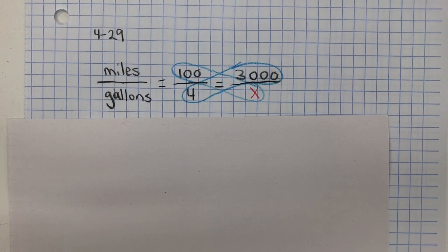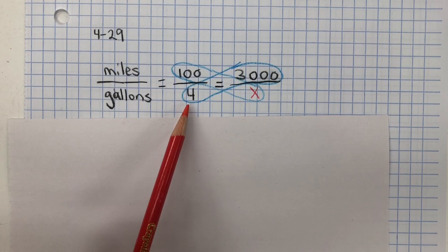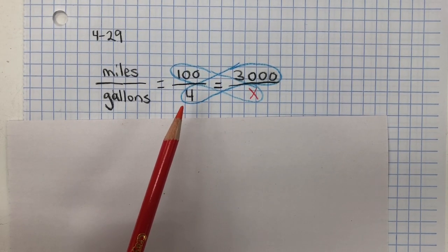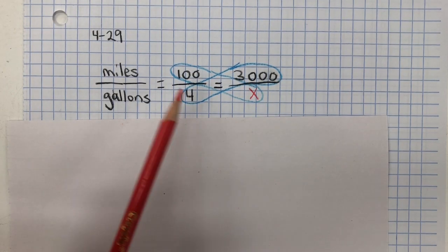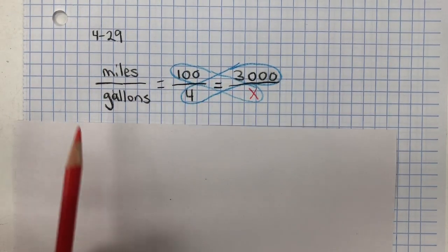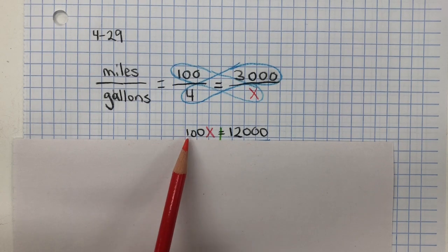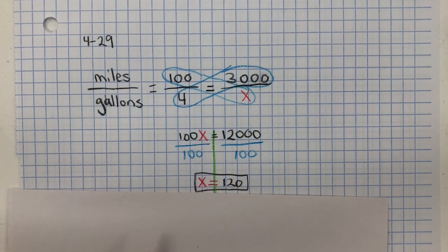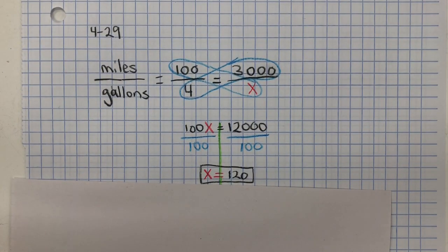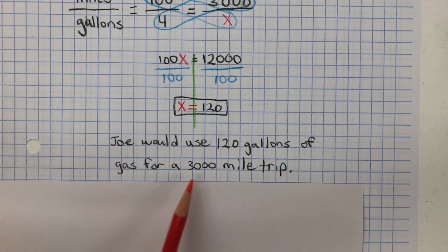In problem 429, Joe drove 100 miles from San Francisco to Gilroy and used 4 gallons of gas. So I'm showing that miles to gallons. He drove 100 miles for every 4 gallons of gas. How much gas should he expect to use for a 3,000 mile trip? Well, how many gallons? We don't know for a 3,000 mile trip. So cross-multiply, 100 multiplied by x, which gives us 100x. 4 multiplied by 3,000 is 12,000. Now we solve for x. Inverse property of multiplication is division. We're going to get the giant 1. 100 divided by 100 is 1. What you do to one side, you do to the other. And we get x equals 120. So Joe would use 120 gallons of gas for a 3,000 mile trip.